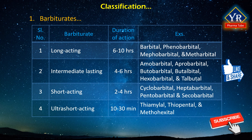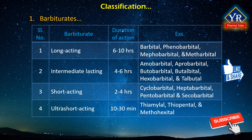The onset of action for intermediate-acting barbiturates is about 30 minutes, and their hypnotic effect lasts for 4 to 6 hours. Most of them are first metabolized by the liver, and the metabolized product is subsequently excreted by the kidney. They are generally used in insomnia and also as a preoperative sedative, and they find use in treatment of convulsions when administered intravenously. Examples are amobarbital, aprobarbital, butobarbital, butalbital, hexobarbital, and talbutal.